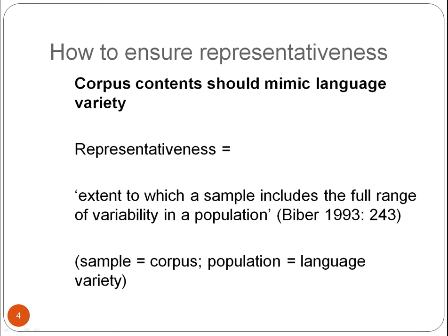How can we make sure that our corpus is indeed representative? The contents of the corpus should mimic the language variety itself. Representativeness has been defined technically as the extent to which a sample includes the full range of variability in a population. Rephrasing sample with corpus and population with language variety: representativeness is the extent to which a corpus includes the full range of variability in a language variety.